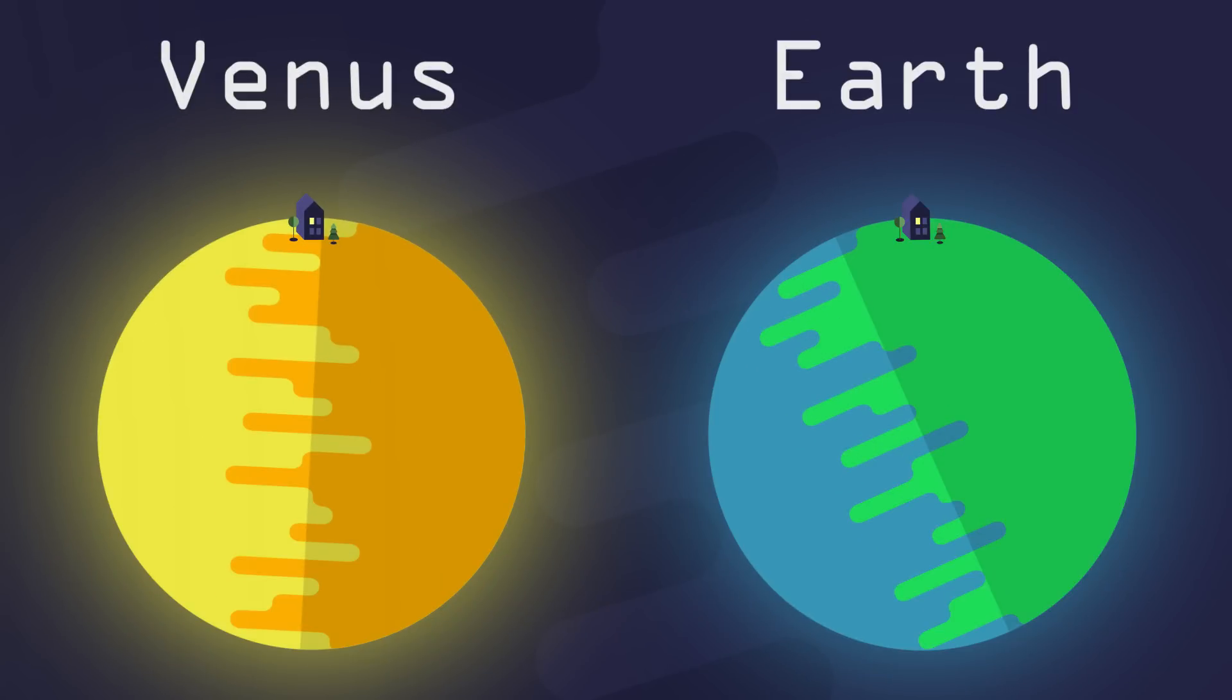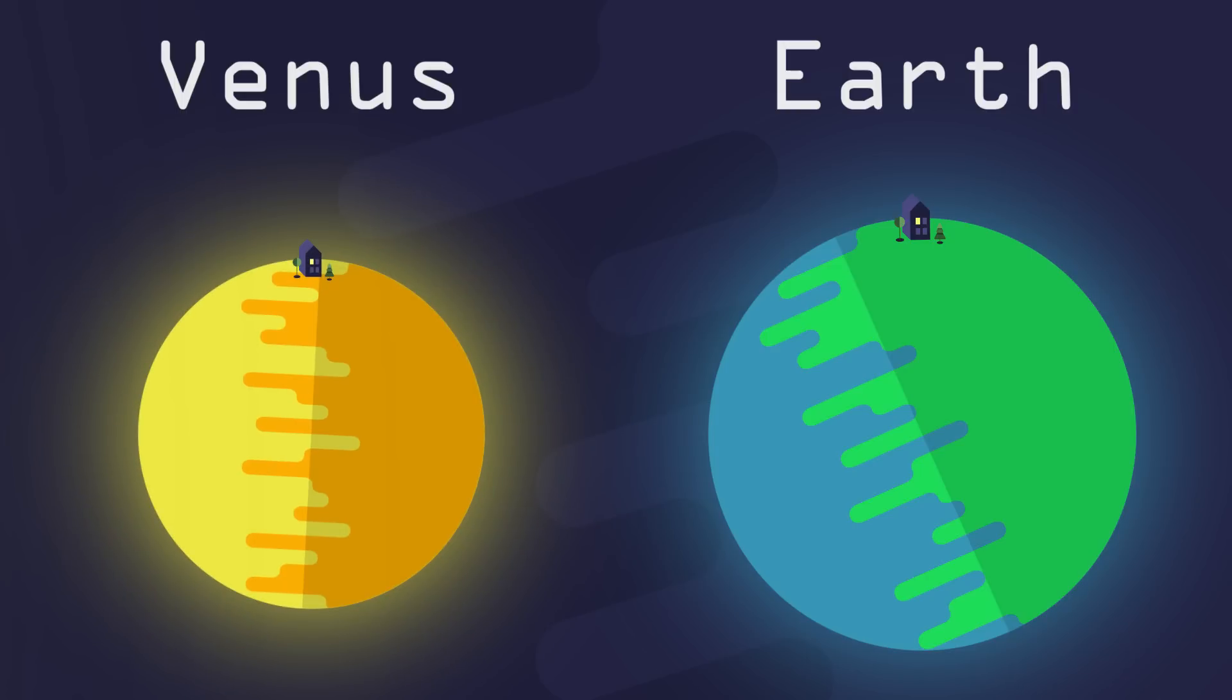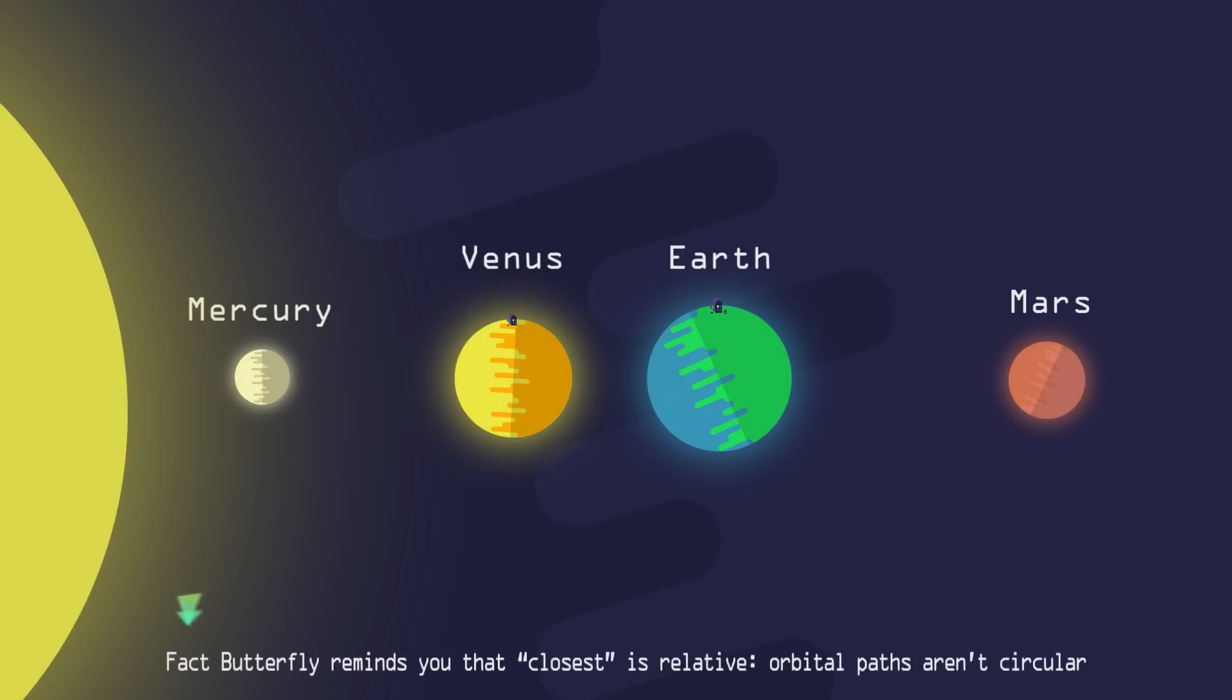Venus is sometimes called Earth's sister planet. Their size is similar and Venus has around 81% of Earth's mass. Both planets have a central core, a molten mantle, and a crust. They share the same area of our solar system, with Venus being the closest planet to Earth.